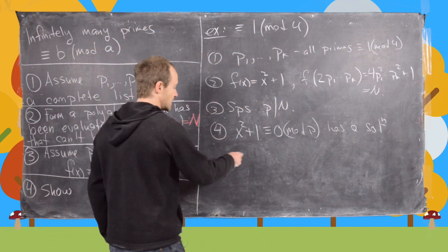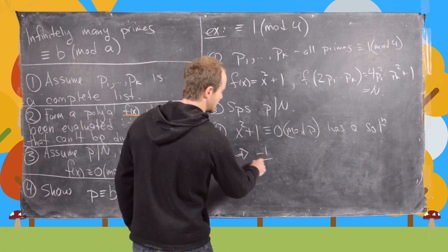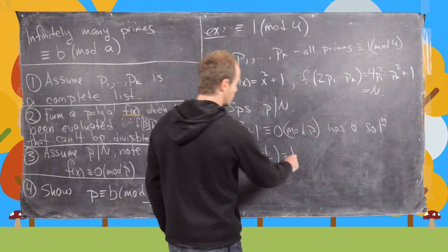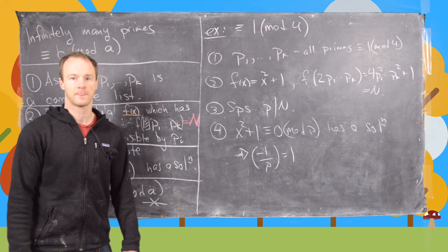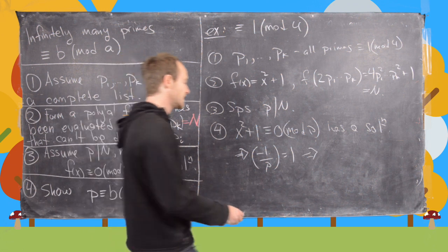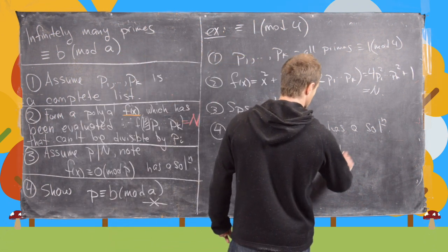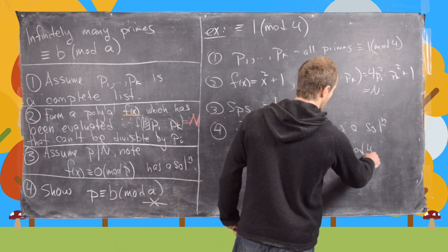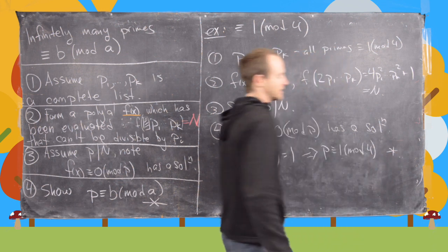But that tells us using the Legendre symbol that negative 1 over p equals 1, but then again by the theory of quadratic residues that tells us that p is congruent to 1 mod 4 which is a contradiction.